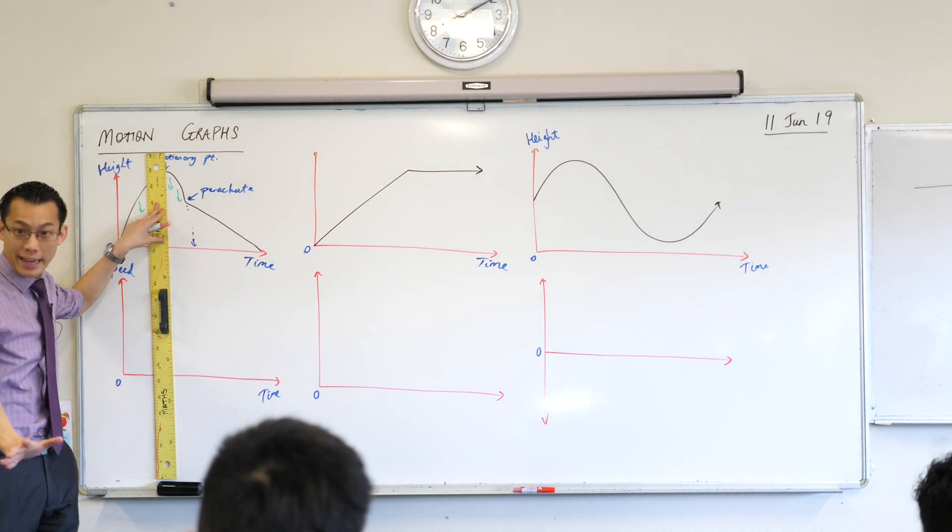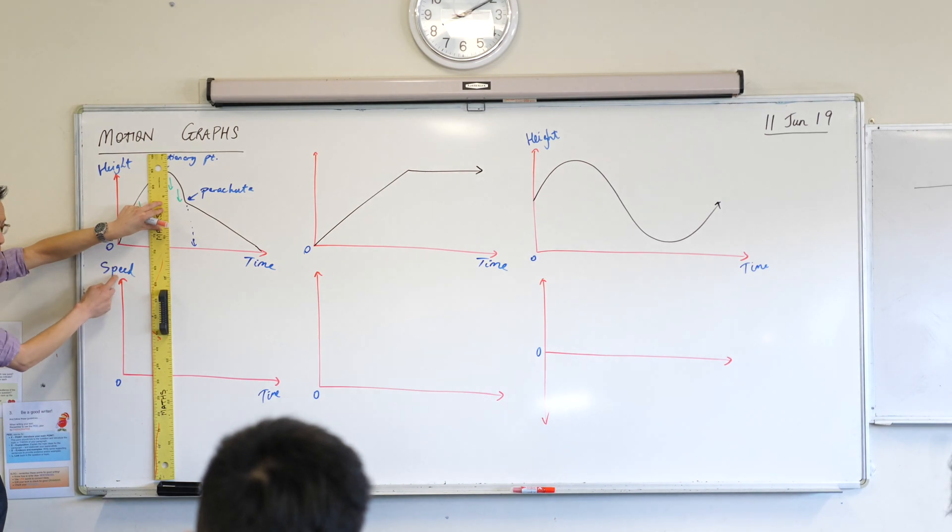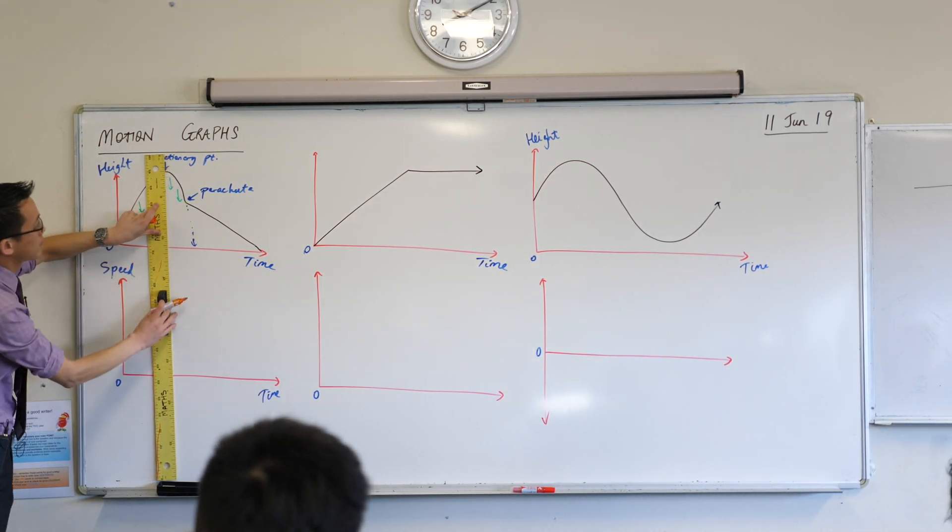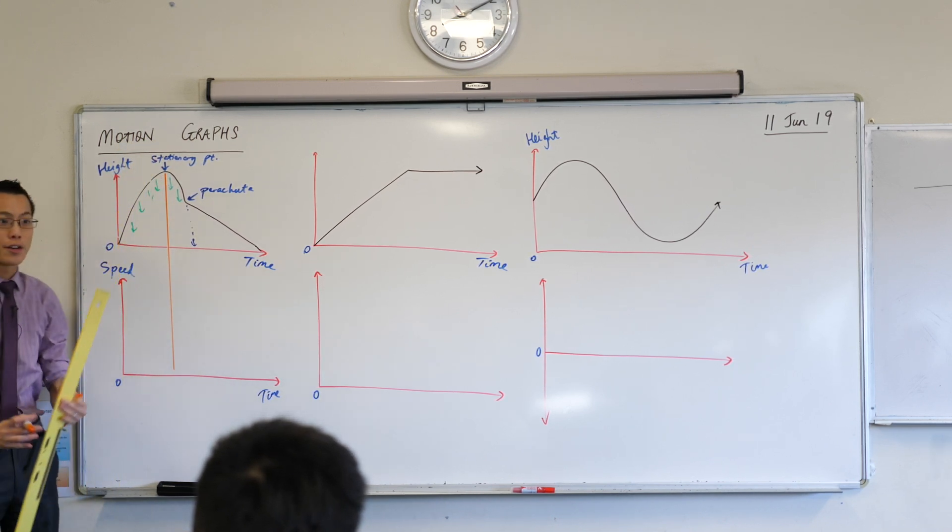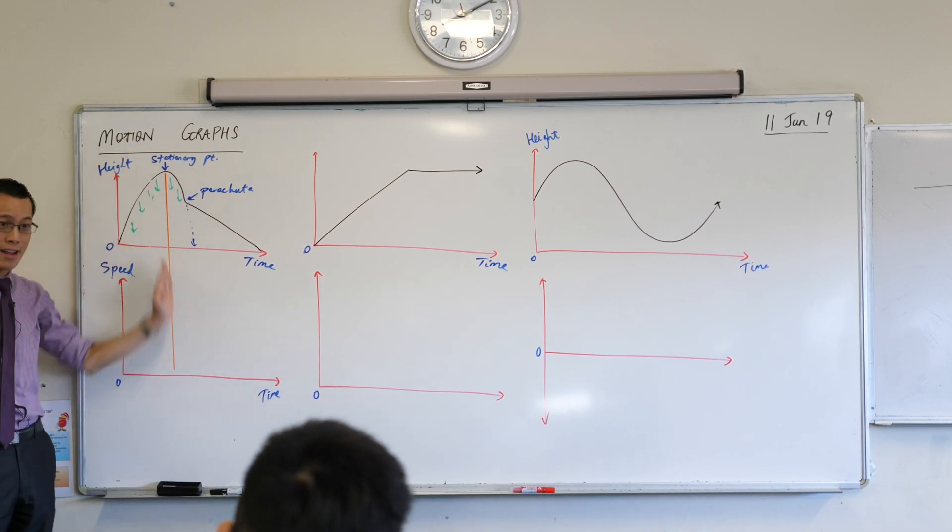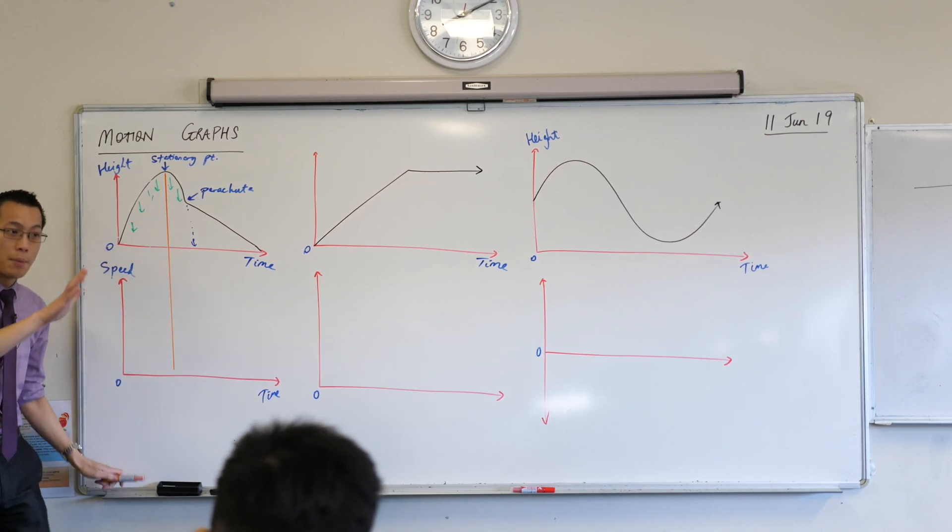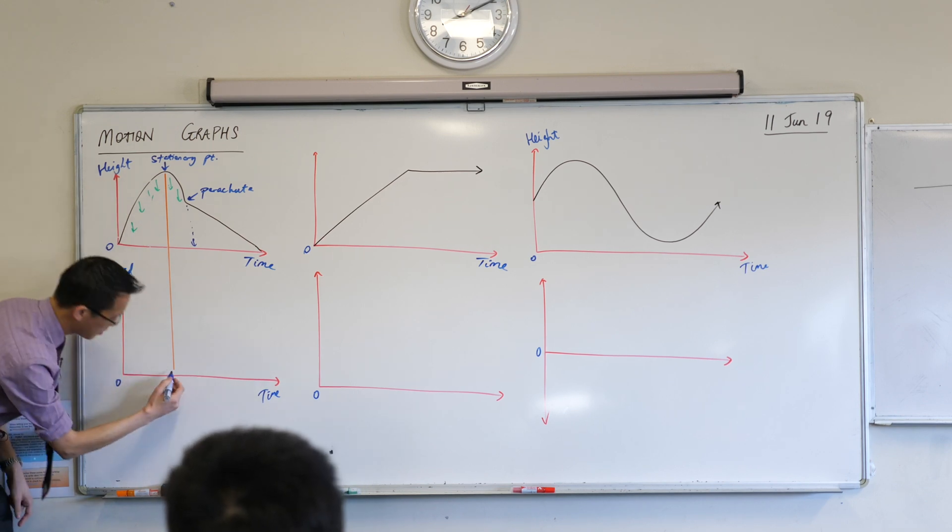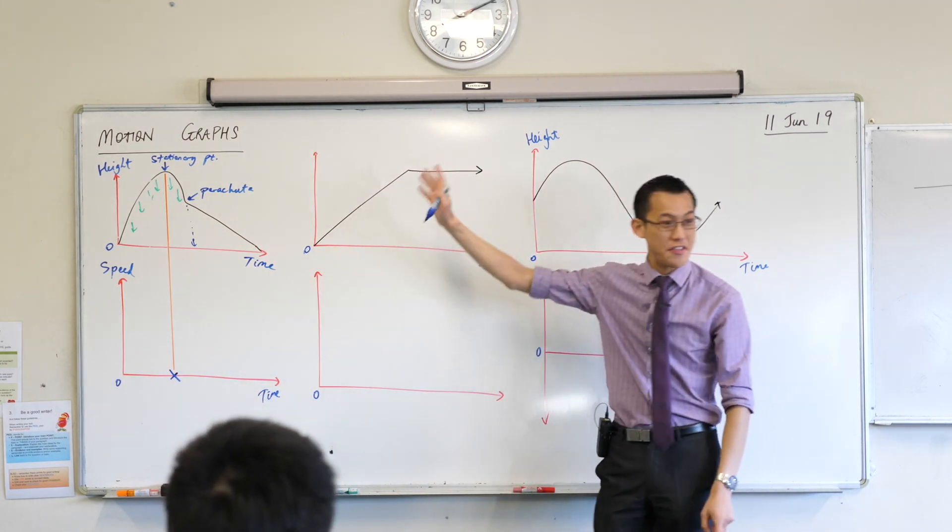We call it a stationary point because where is Cannon Man going? What direction is he moving at that instant in time? The speed is zero. He's not going anywhere. The speed is zero. So when I look at my speed graph, if I want the speed to be zero, I'm going to draw this all the way down and I encourage you to do the same. I've got a vertical line there representing it's the same time coordinate. Same time coordinate, time whatever. I don't know, one and a half seconds or something like that. But importantly, the speed at this instant in time is going to be zero.